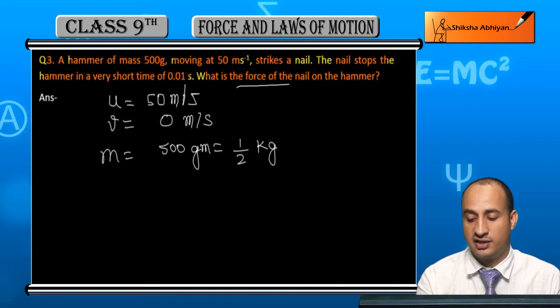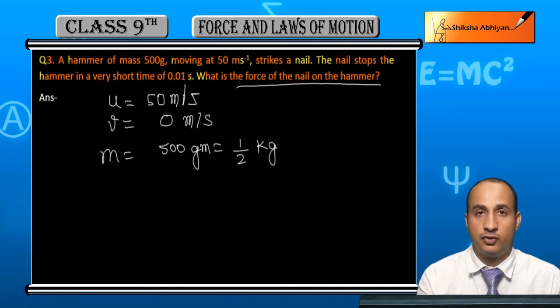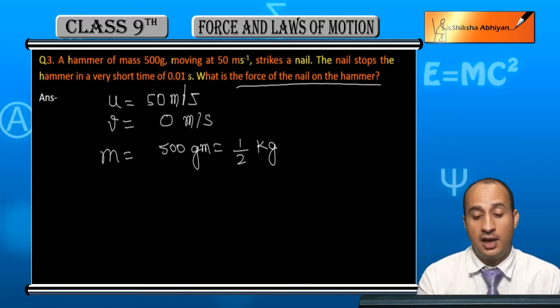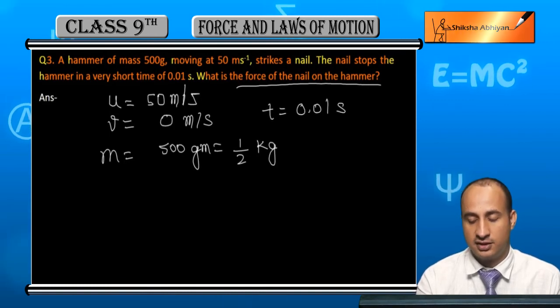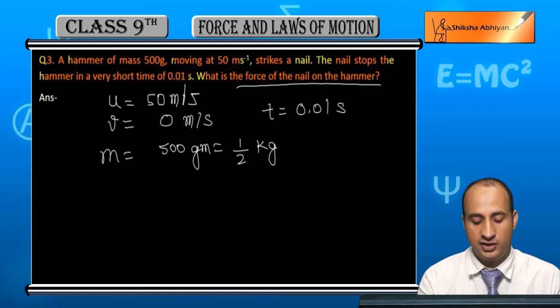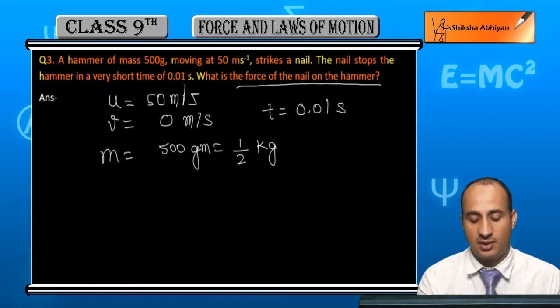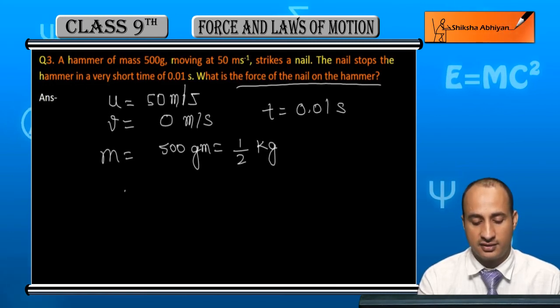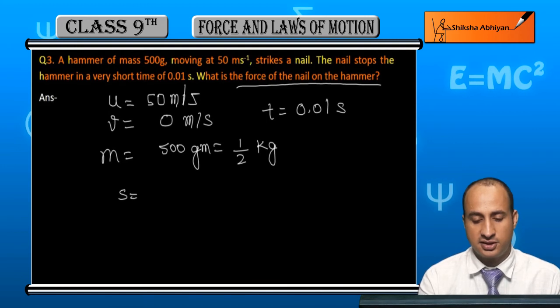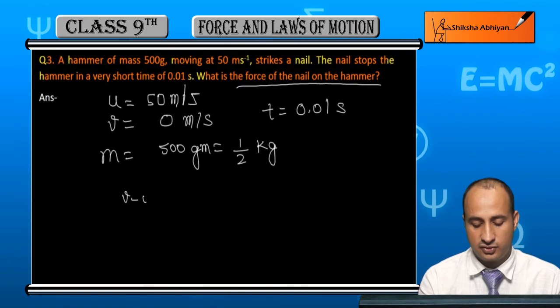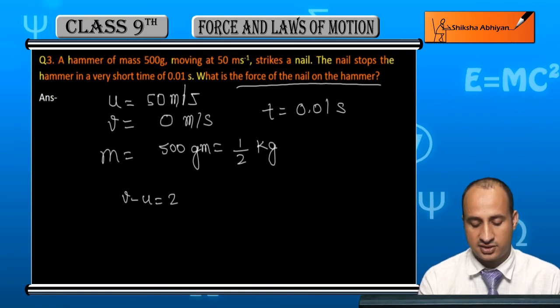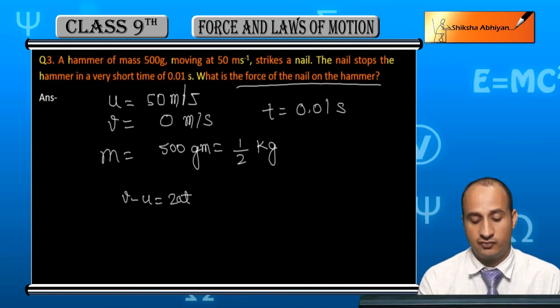The force of the nail on the hammer equals mass into acceleration, F equals ma. The time here is 0.01 seconds. We'll use the formula v minus u equals 2as to find the acceleration.